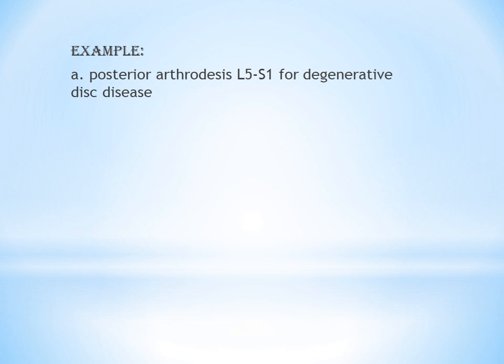Example: Posterior arthrodesis L5–S1 for degenerative disc disease. The approach is posterior, the bones involved are lumbar and sacral (L5–S1), and the interspace count is one. The code is 22612.